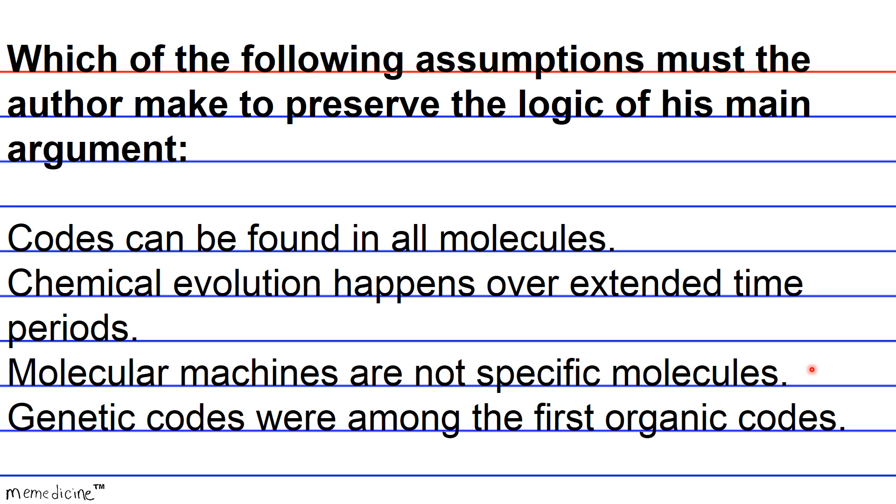In paragraph 2, so go back and look at paragraph 2, the author states that, quote, specific molecules do not arise spontaneously. And then in paragraph 3, the author states that molecular machines could arise spontaneously, thus, if you assume that molecular machines are not specific molecules, then the statement makes sense and it wouldn't be contradictory. So this assumption would have to be true.